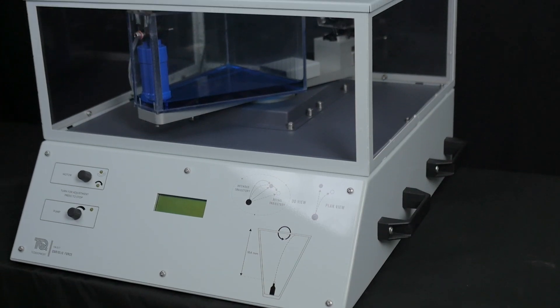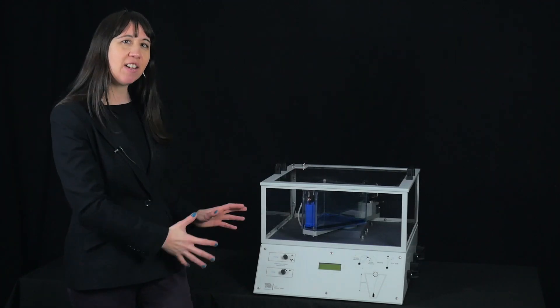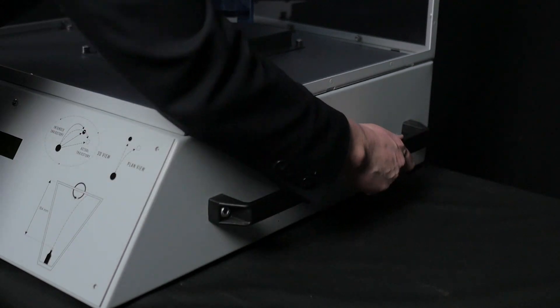Let's take a look at the Coriolis Force apparatus in more detail. It consists of a benchtop base with sturdy handles on both sides, which can easily be lifted.